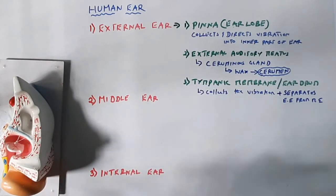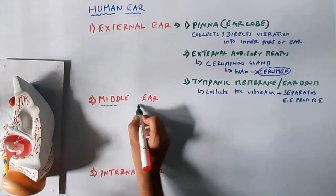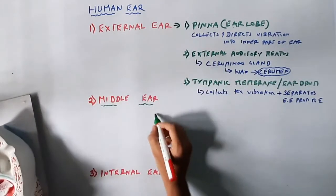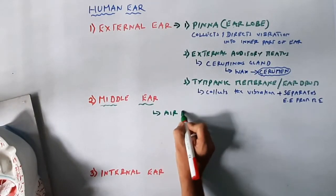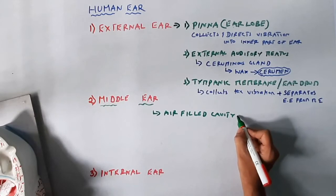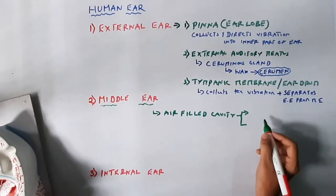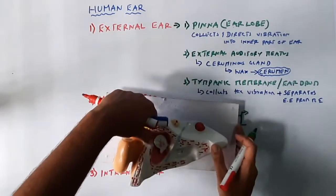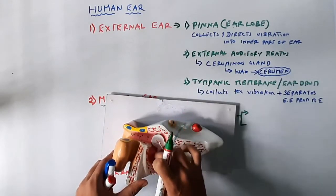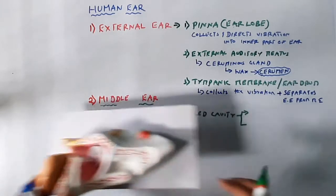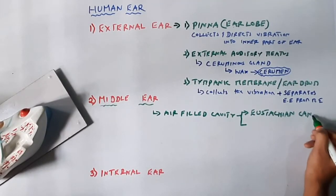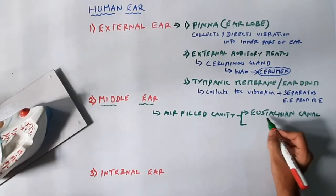Now let's talk about the middle ear. The middle ear mainly contains an air-filled cavity. This air-filled cavity has two main components. The first is a long canal called the Eustachian canal, which runs down from the air-filled cavity towards your pharynx.